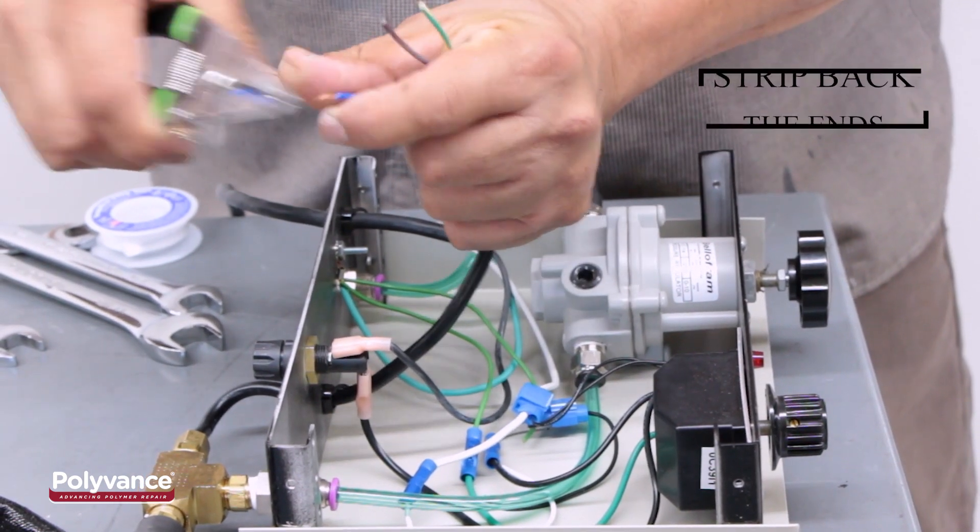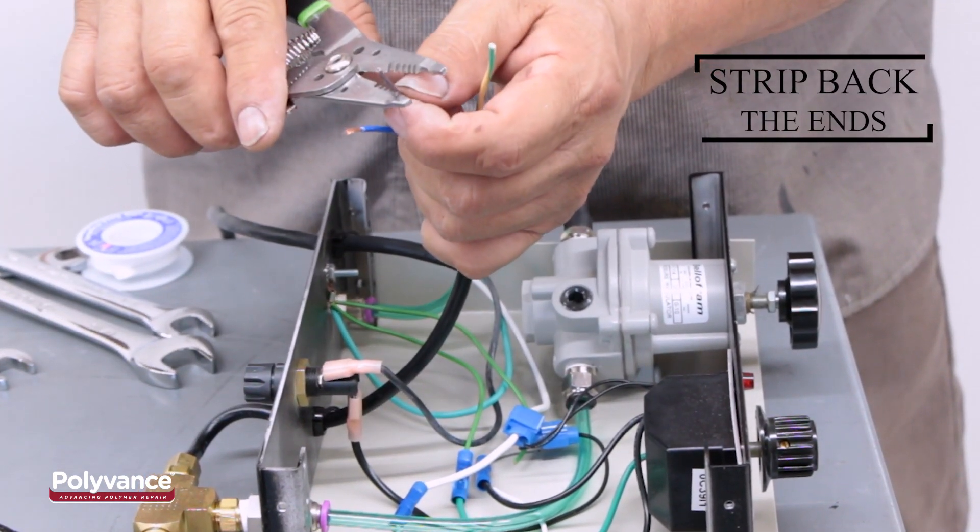Then, strip back the ends of the blue, brown, and green wires from the power cord.